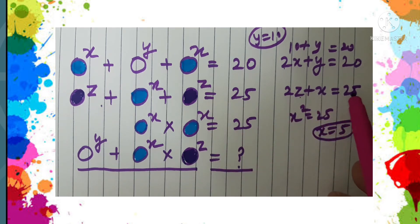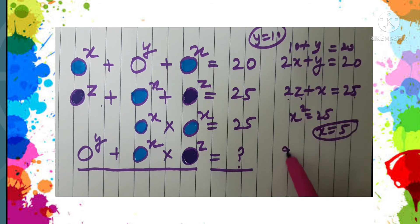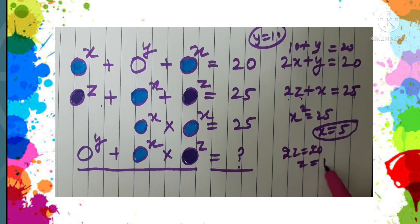From the second equation, 2Z plus X is 25. The value of X is 5, so that means 2Z is 25 minus 5, which is 20. So 2Z is 20, so Z is equal to 20 by 2, that is 10.